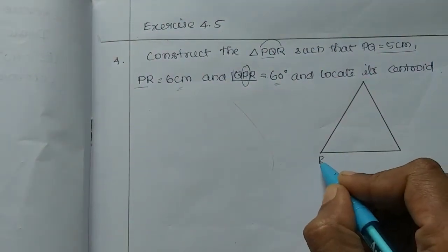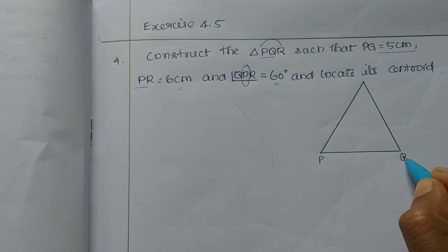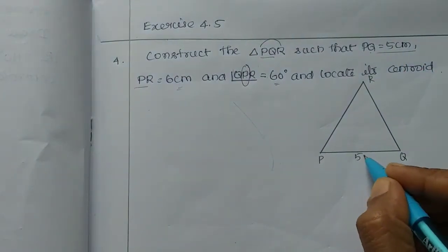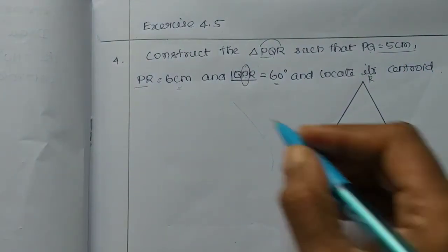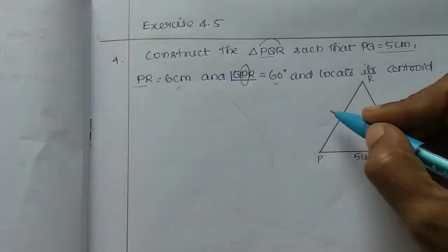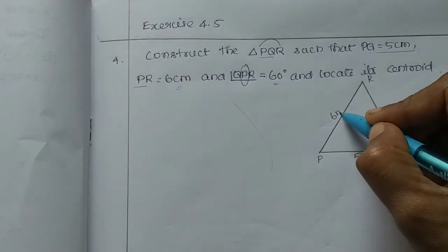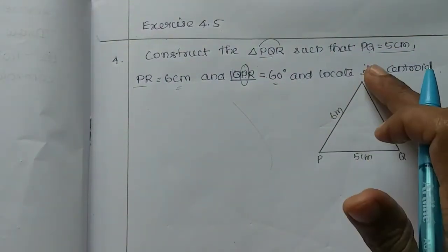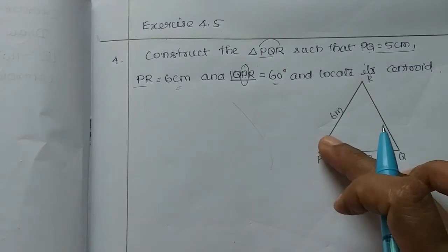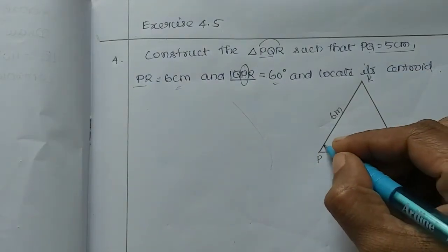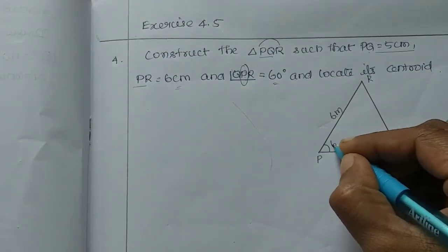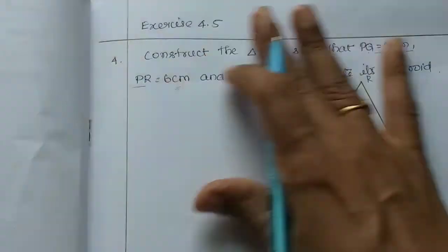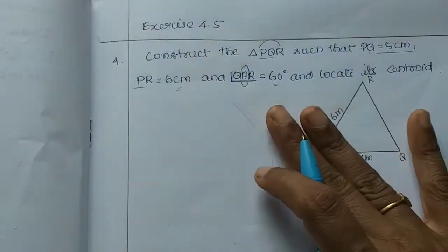Let's draw the triangle PQR. PQ is 5cm and PR is 6cm. The angle QPR — the middle is P — so this is 60 degrees. The rough diagram is ready; now we will draw a mark.